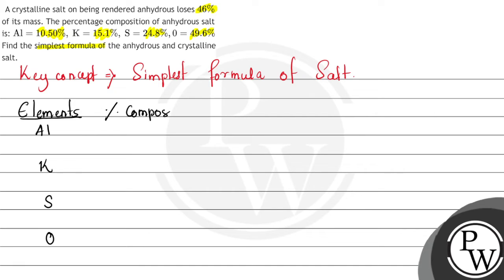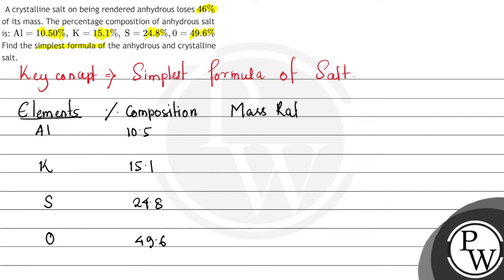The percentage composition of aluminum is 10.5, for potassium it is 15.1, for sulfur it is 24.8, and for oxygen it is 49.6. We need to find out the mass ratio by dividing each element's percentage by its atomic mass. For aluminum, we divide 10.5 by 27 (the atomic mass of aluminum) and we get 0.39.